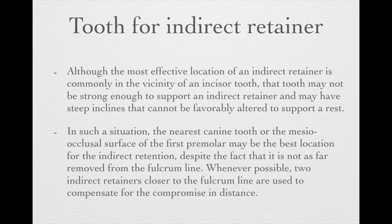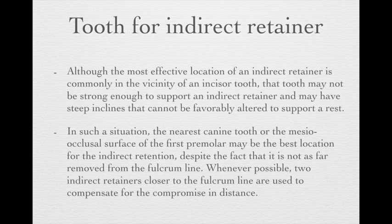If you choose the canine or first premolar as your indirect retainer location, ideally you would use two indirect retainers close to the fulcrum line, because we are not choosing the ideal position following the principle — we have already compromised on distance. So we use one more indirect retainer to compensate for the compromised distance. If you have those circumstances, you would more likely use the canine and premolar rather than the central or lateral incisor.